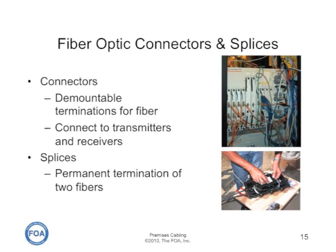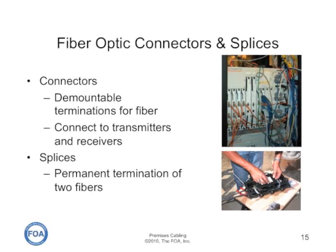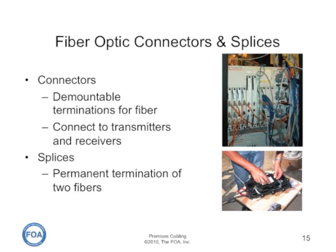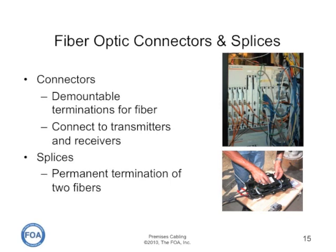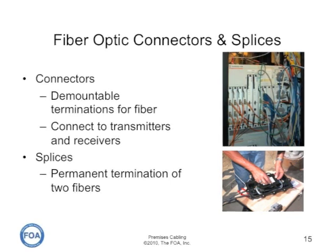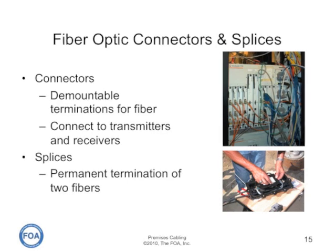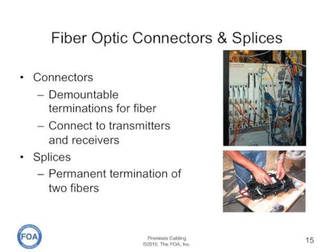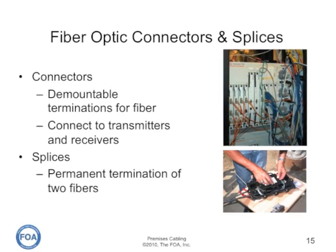Connectors can be used to create demountable terminations for fibers, like in patch panels, or to connect to transmitters and receivers. Splices are permanent terminations of two fibers, and are typically done by fusion or mechanical splicing. The splices are then sealed in a watertight enclosure and put into some location where they may never be touched again.